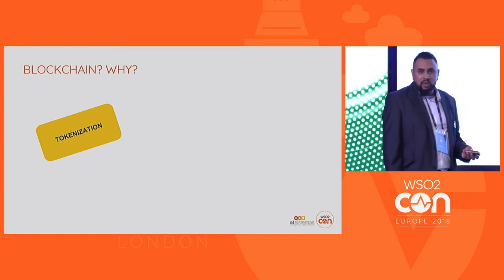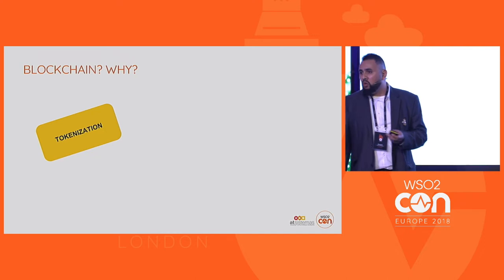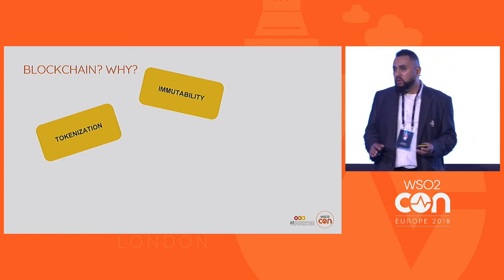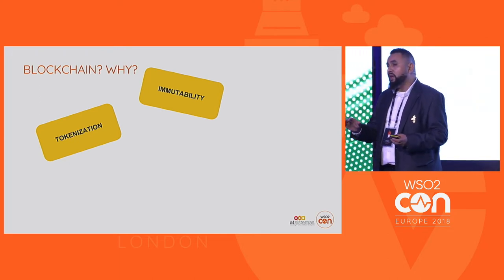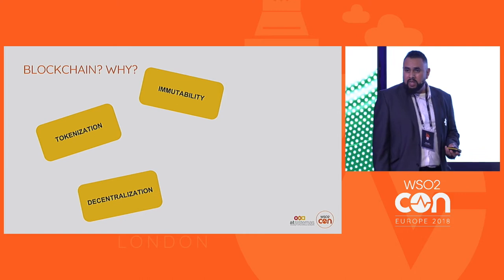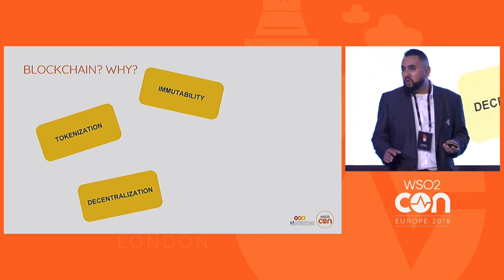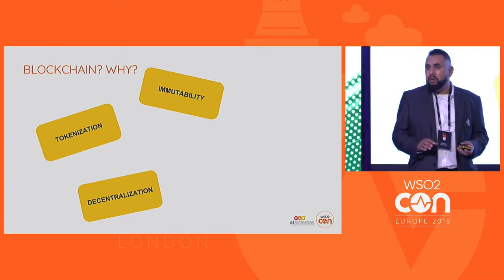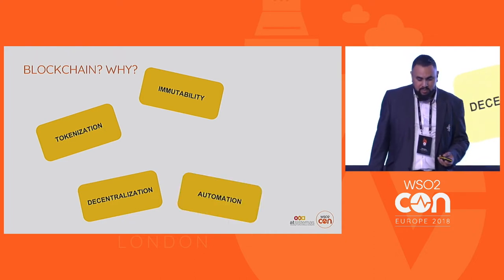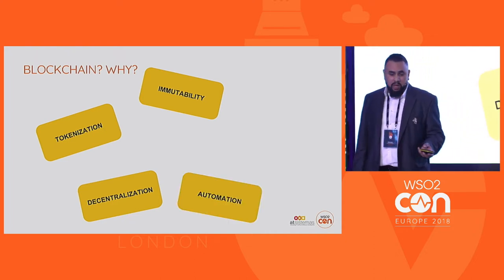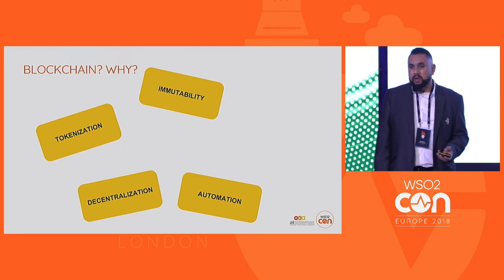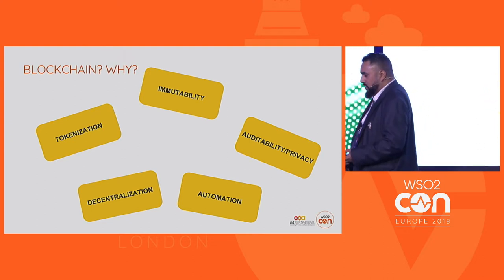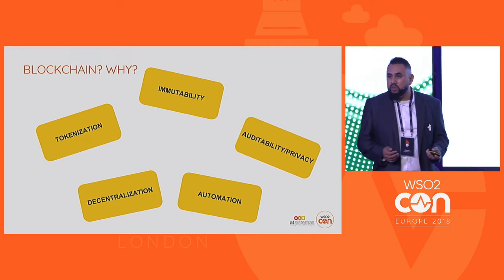The first capability is tokenization — the ability to represent models of physical or virtual assets inside the blockchain. The second is immutability — ensuring that all information stored in the blockchain remains stored and nobody can manipulate it. This is supported by the third one: decentralization, where all information is spread across all nodes in the blockchain network, organized using a specific consensus algorithm. The fourth is automation, supported by the so-called smart contracts. And the fifth is the capability to audit or consult the information stored in the blockchain.